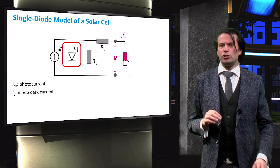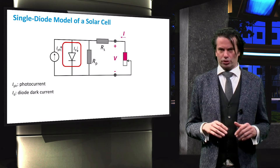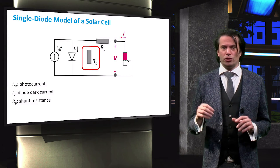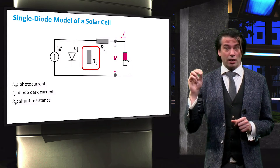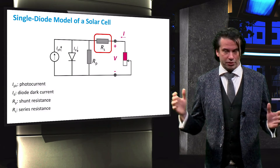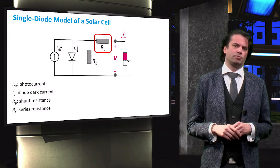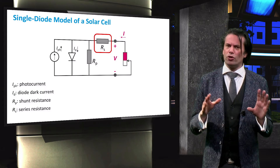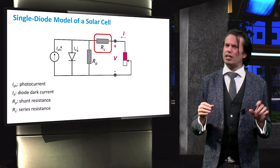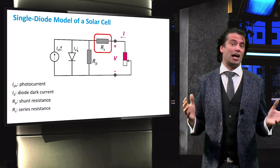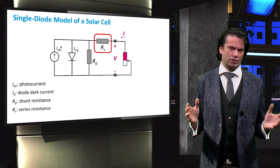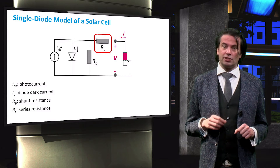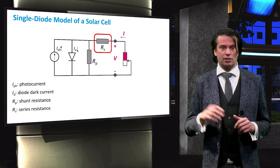Next we see two resistors: RP, the shunt resistance, and RS, the series resistance. These two resistors are there because the solar cell is not an ideal diode. We will look into the sources of these resistances in the next slide.